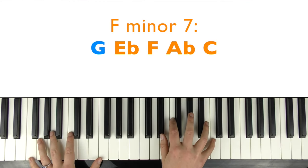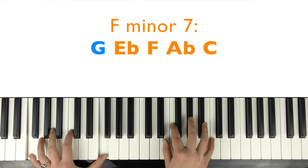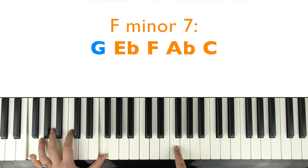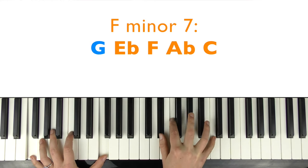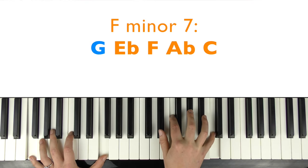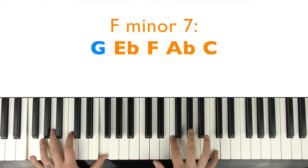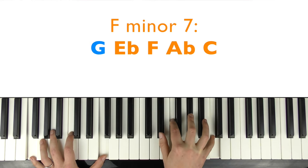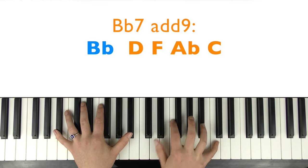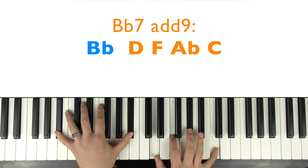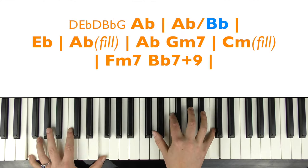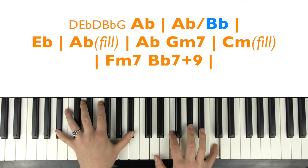The next chord is F minor 7 — so F's in the left hand, and then E-flat, F if you want to add that in there, A-flat and C. You could just play that if you want, or add the F in there as well. You're going to rock those — top notes, bottom note, top notes, bottom note. 'I've seen that.' Then you're going to change the E-flat to a D, still play the other notes, and change the left hand to B-flat. 'I've seen that road before.' That gives us a B-flat 7 chord add 9.